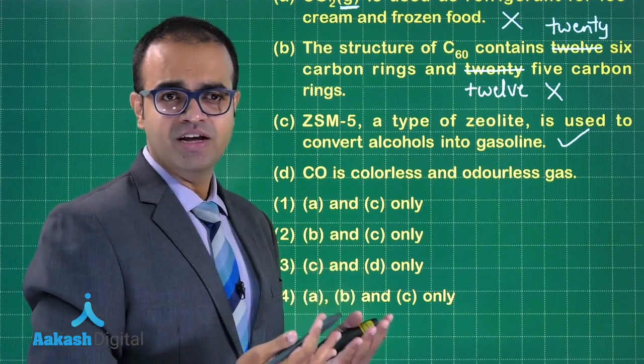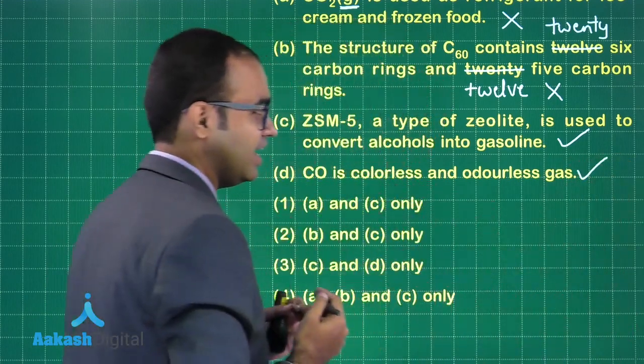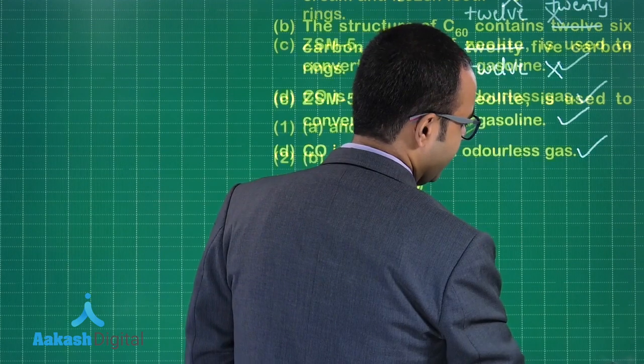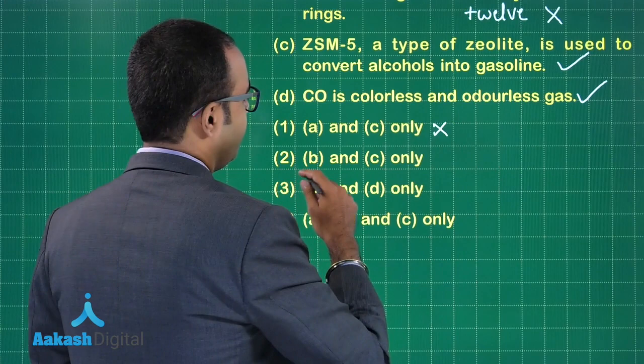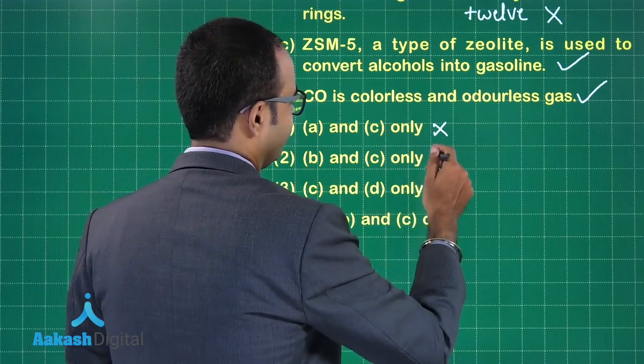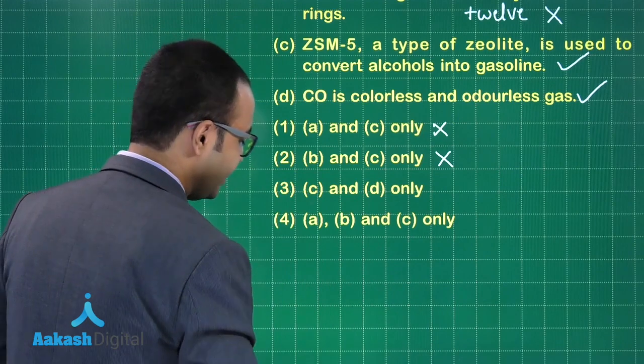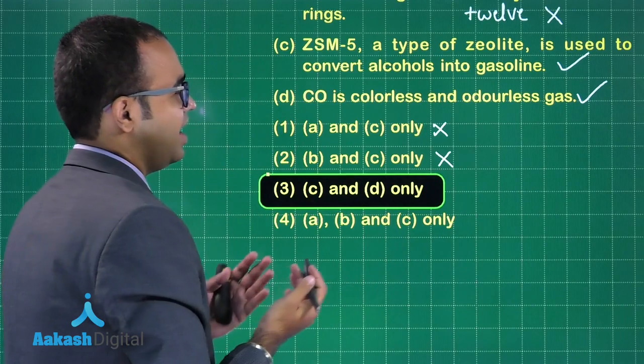So let us look at the options that are available to us. A and C only? No. B and C only? No. C and D? Yes, C and D is correct. So the correct answer is option three. I hope you have understood this. It was a factual question. You should be a little careful because they have mentioned CO2 gas.